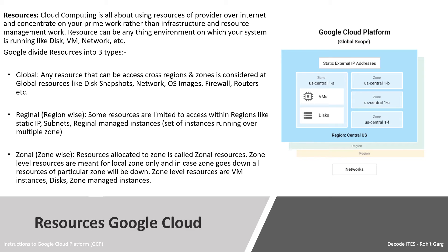Regional resources: some resources are limited to access within regions, like static IP, subnet, and regional managed instances. Zonal resources: resources allocated to a zone are called zonal resources. Zone level resources are meant for the local zone only, and in case a zone goes down, all resources of that particular zone will be down. Zone level resources include VM instances, disk, and zone managed instances.